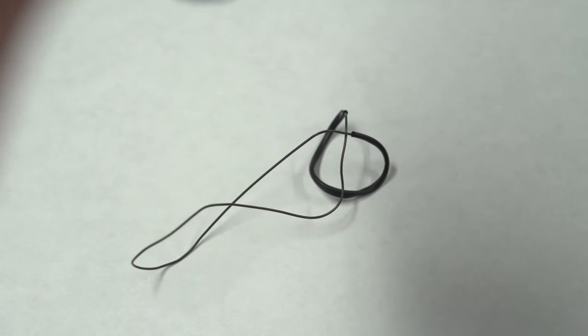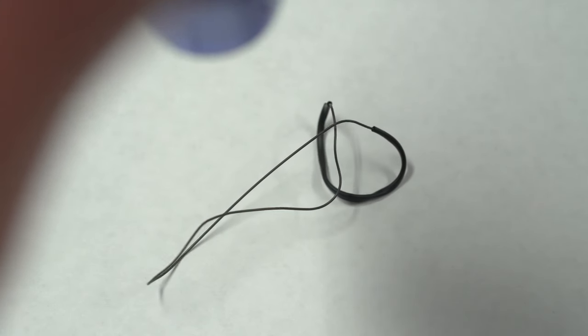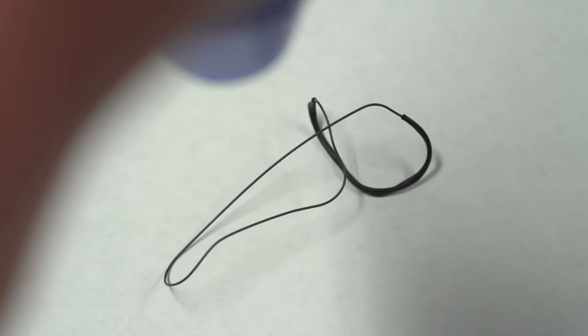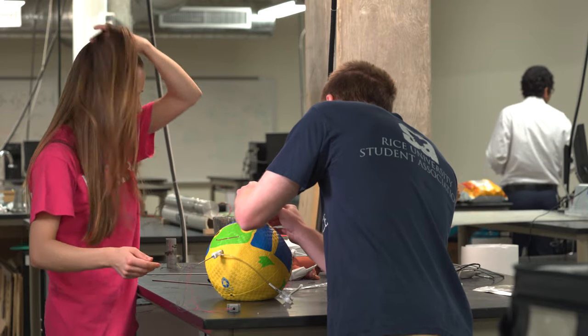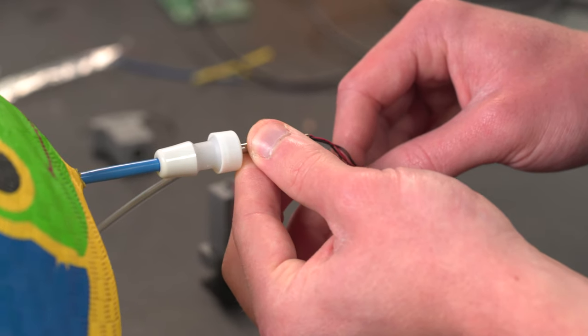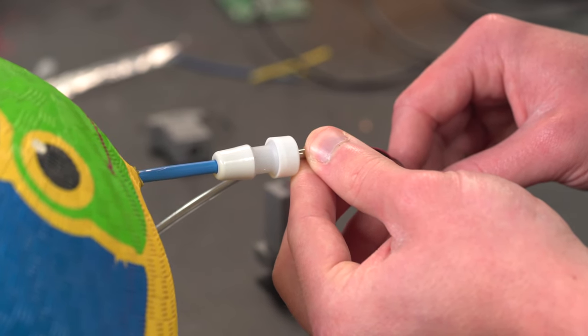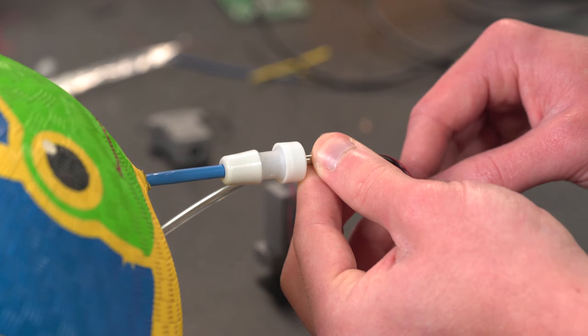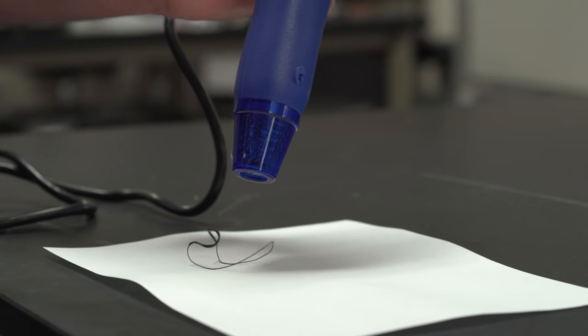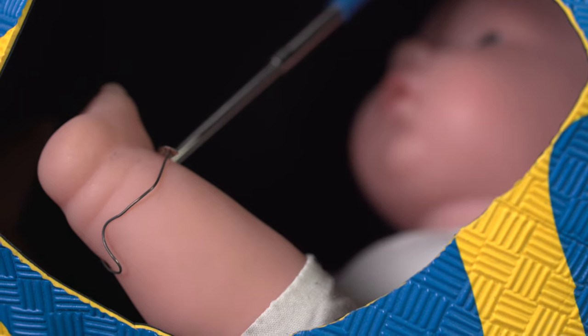Nitinol is a memory shaped metal that you can train to take a specific shape at a certain temperature. It was especially useful when packaging our device flat because we're limited by the size constraint of this trocar, so we had to have a method of flattening our device and then having it expand and be able to be wrapped around the fetus's limb.